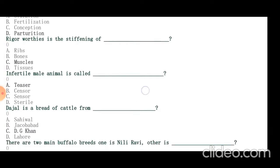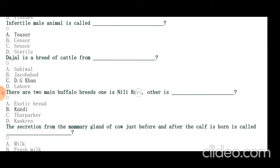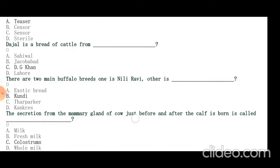Dajal is breed of cattle from Dera Ghazi Khan. There are two main buffalo breeds: Nili Ravi and Kundi. The secretion from mammary gland of cow just before and after the calf is born is called colostrum.